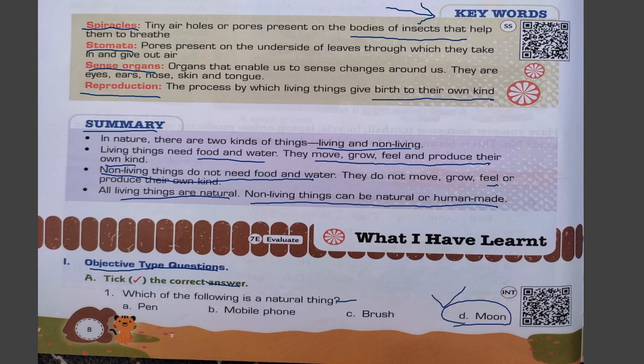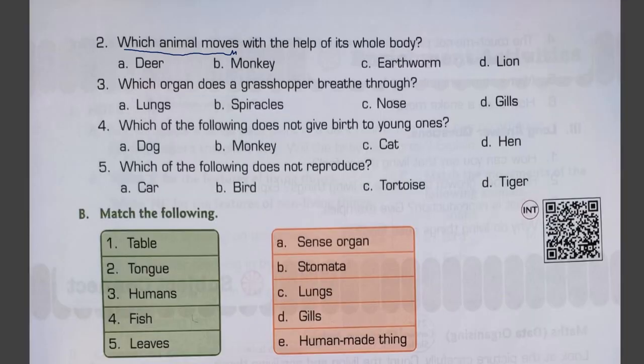Question 2: which animal moves with the help of its whole body — deer, monkey, earthworm, or lion? Earthworm is the right answer, as earthworms move with the help of their whole body. Question 3: which organ does a grasshopper breathe through? Spiracles. Question 4: which of the following does not give birth to young ones? Hen lays eggs, so it does not give birth to young ones. Question 5: which of the following does not reproduce — car, bird, tortoise, or tiger? A car does not reproduce because it is a non-living thing.